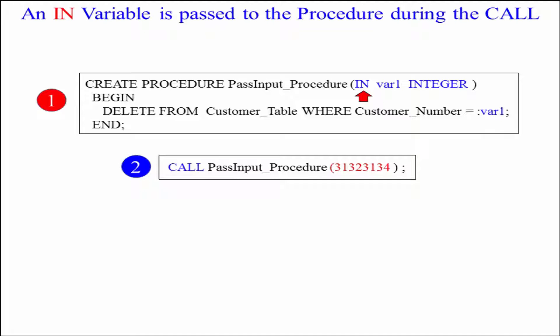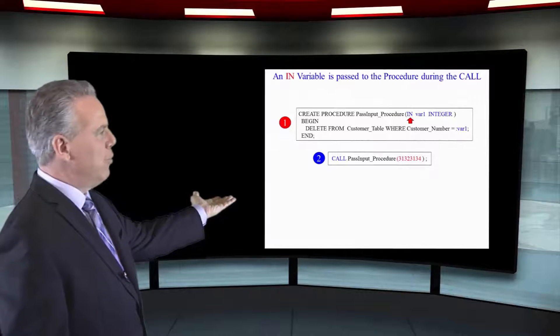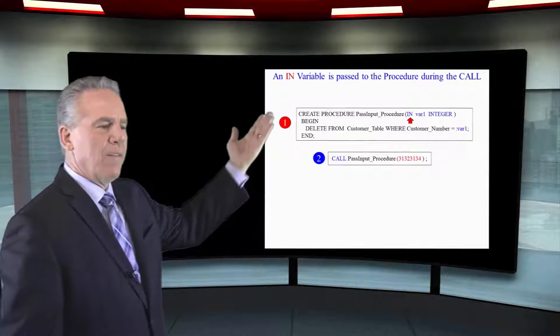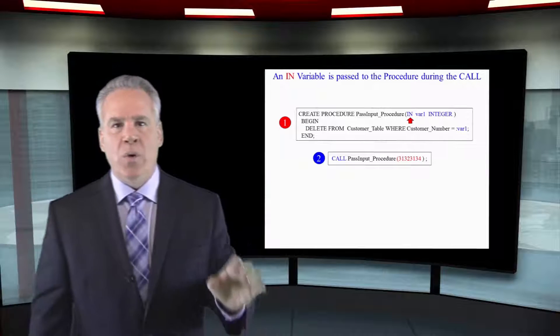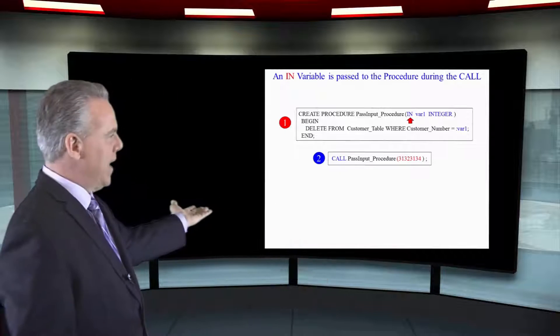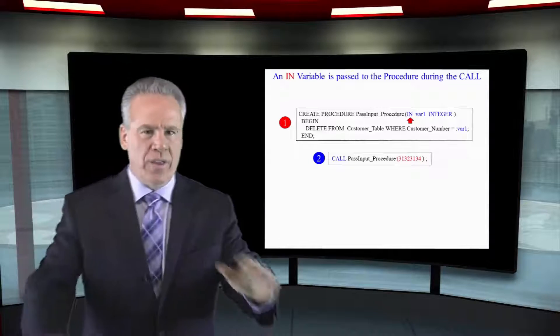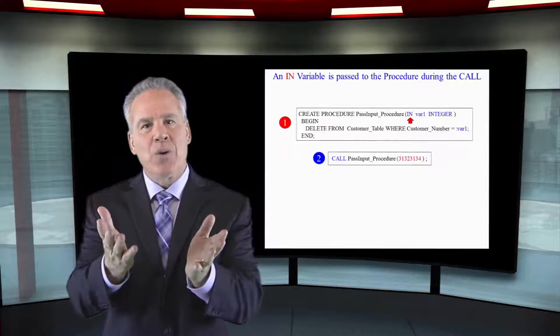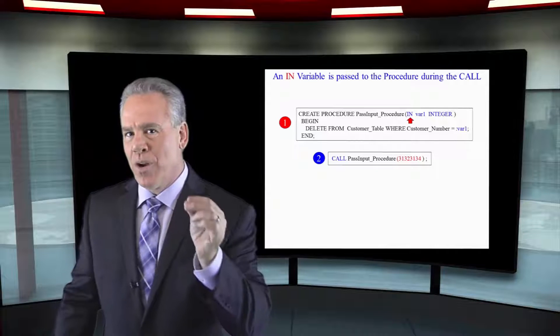Now we can begin and say delete from customer table where customer number is equal to var1. Again, when we call our procedure, call pass input procedure, we there give it the actual customer number that we're going to want to work with.